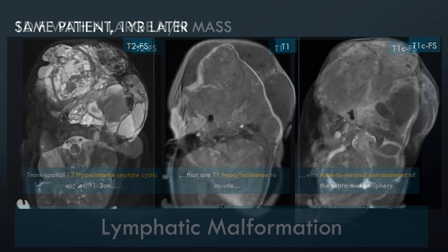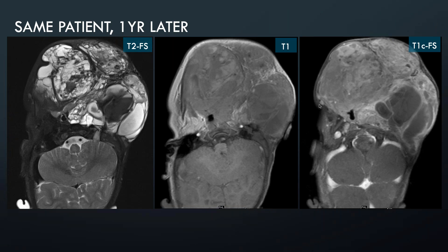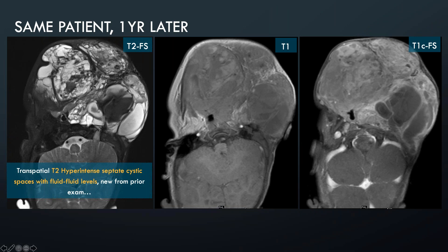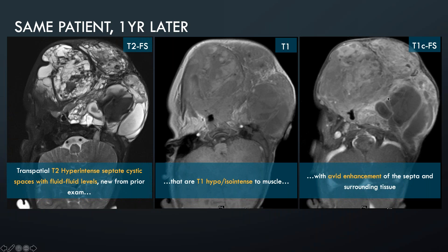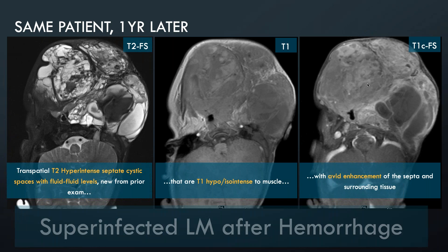In fact, the next case shows exactly that — the same patient a year later, with a transfacial T2 hyperintense septate cystic structure with fluid-fluid levels that are far more obvious. Notice this layer demonstrates hypointensity to adjacent muscle, but after contrast administration there's far more septal enhancement. There's enhancement of the areas surrounding the cystic spaces rather than the cysts themselves — this would be concerning for superinfection of these lymphatic malformations.